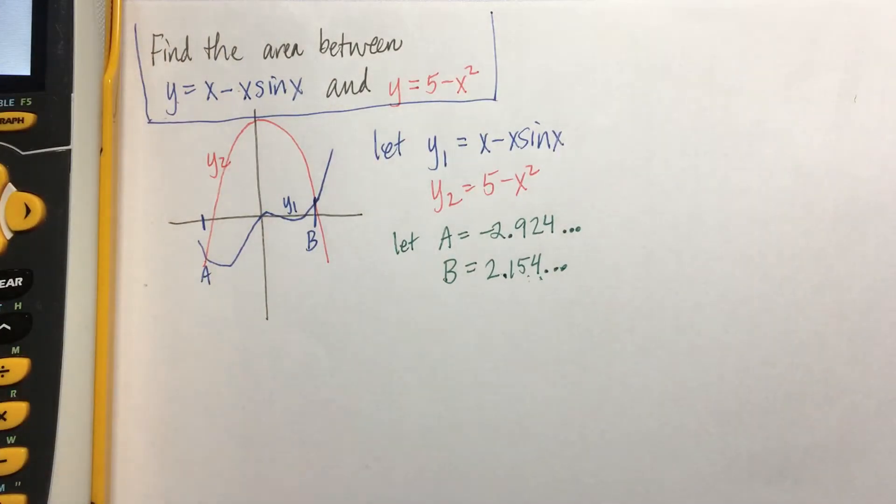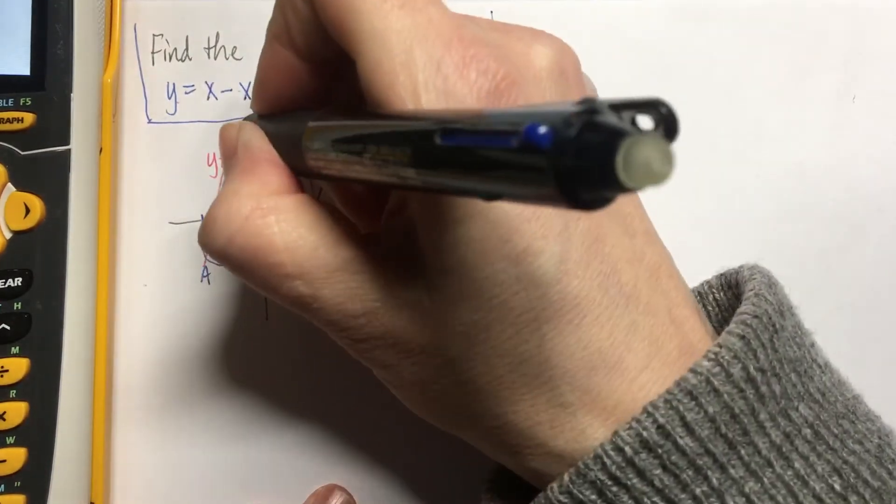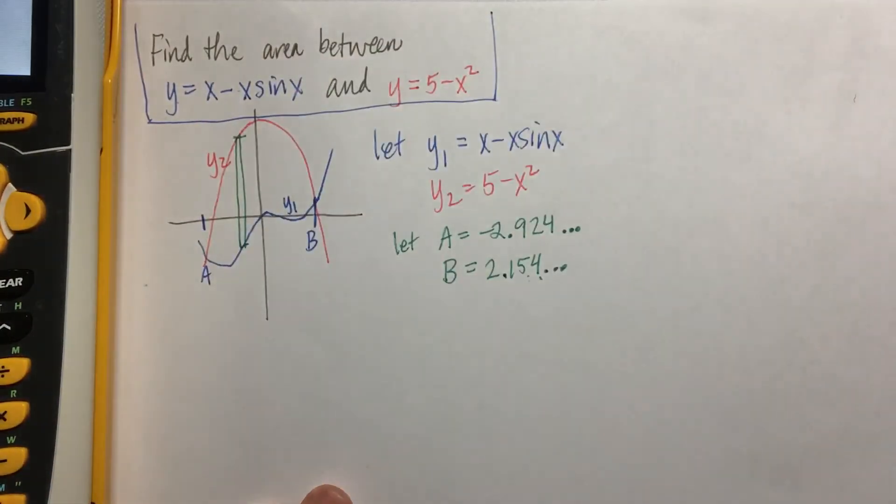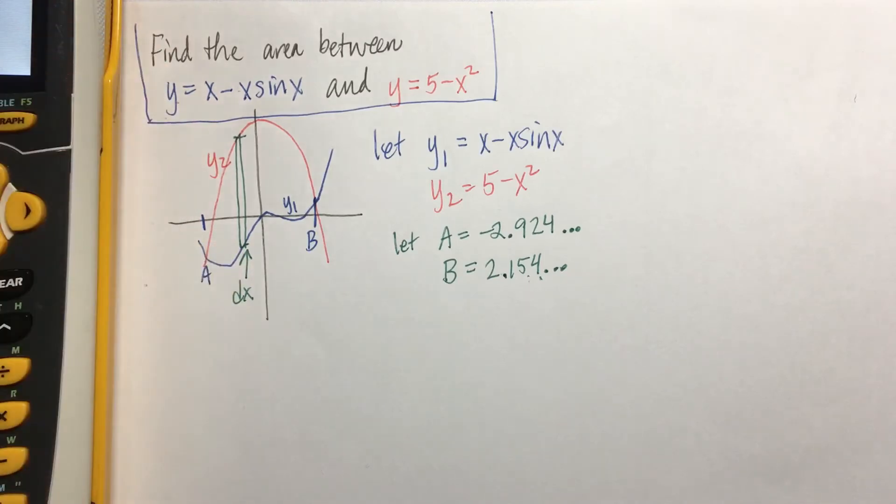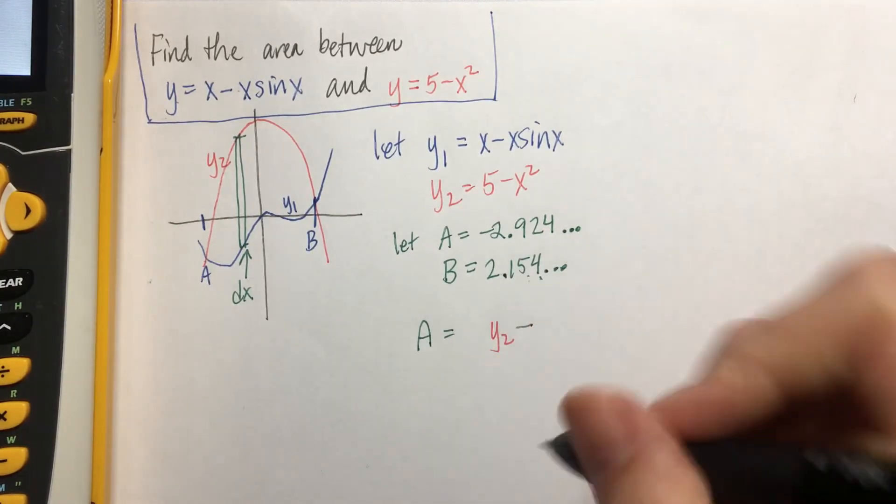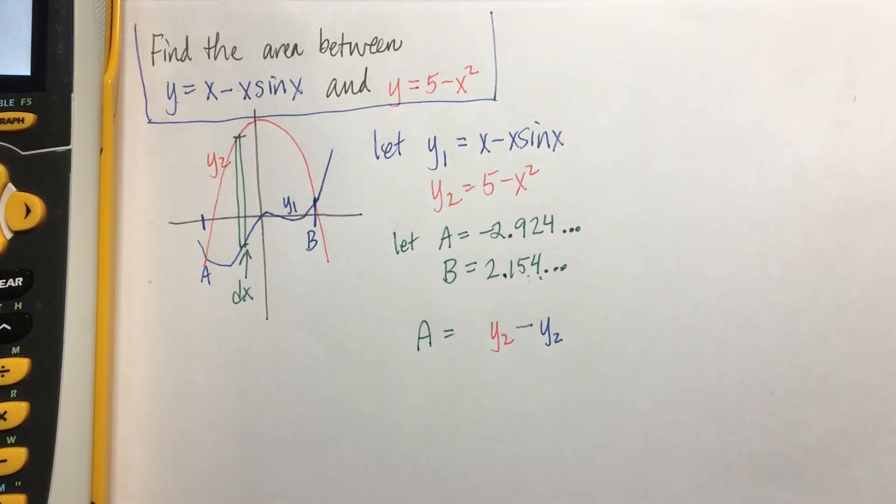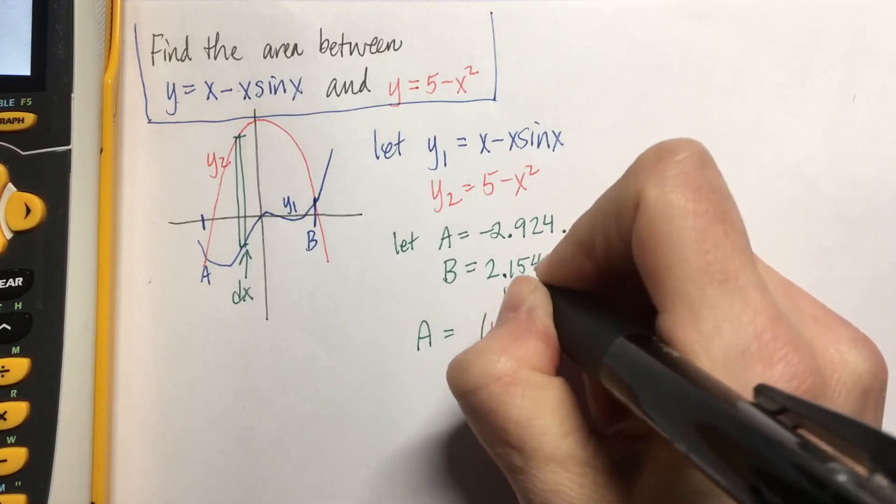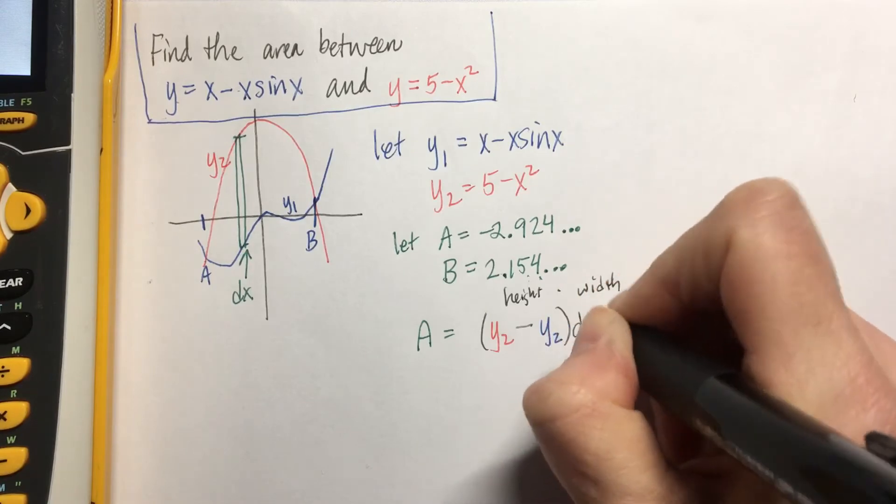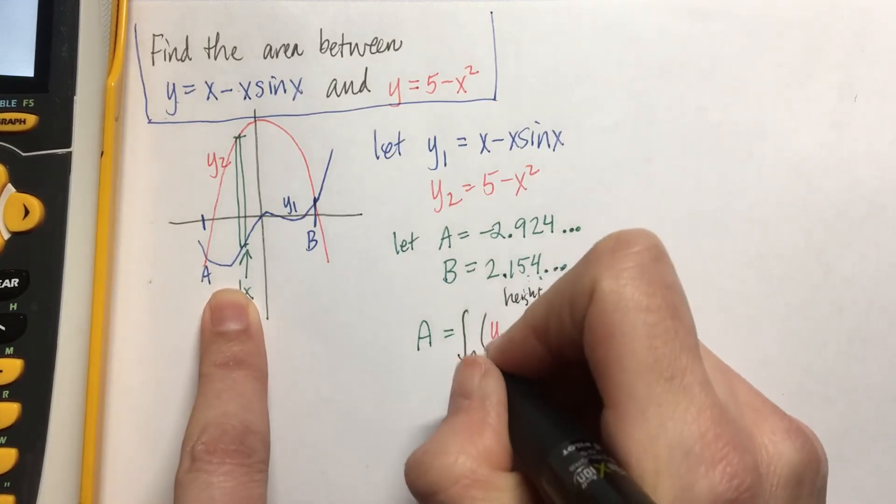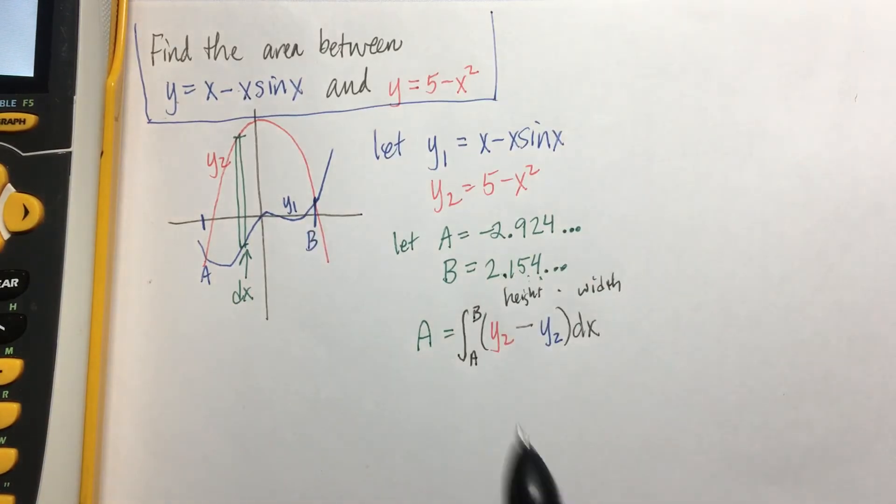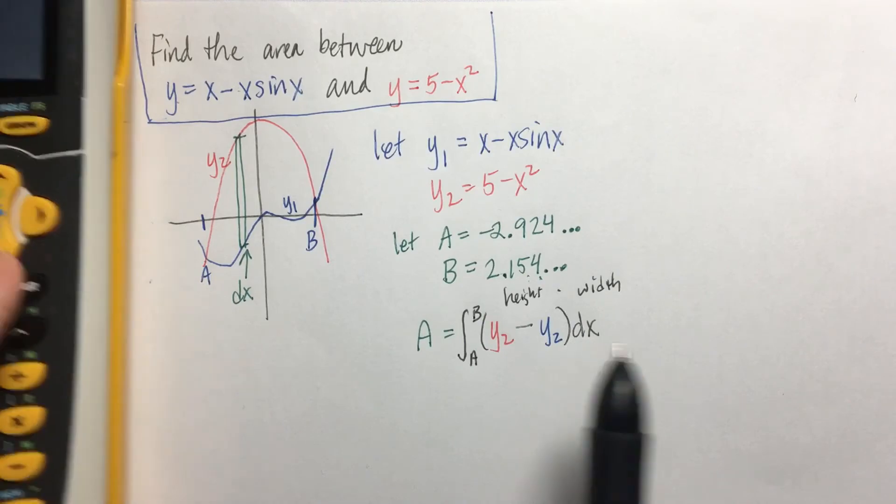So looking at this, if I look at my sample rectangle. My sample rectangle has DX for the width. The height is the red minus the blue, or Y2 minus Y1. So my area is going to be Y2, the red, minus the blue, Y1. There's my height times the width, which is DX. And then to get the whole entire area, I can integrate it. My lower bound is A and B is my upper bound. Having this here, I've just given myself directions on what needs to be typed. That's pretty handy.